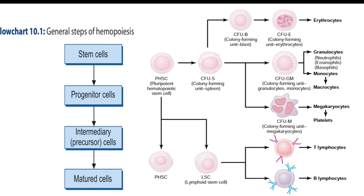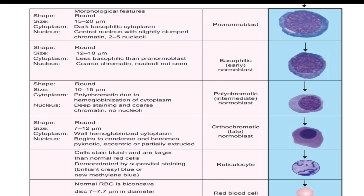Looking at the proper steps of erythropoiesis — here we have intermediary precursor cell stages and matured cell stages. You may see the word 'normoblast'; replace it with 'erythroblast' as it sounds better. During erythropoiesis, we must always keep three points in mind: the cell size progressively reduces; the size of nucleus and number of nucleoli decreases, chromatin material condenses, and finally the nucleus disappears; and the staining reaction of the cytoplasm changes from deep basophilic to polychromatophilic — which is acidophilic plus basophilic — and finally to acidophilic.